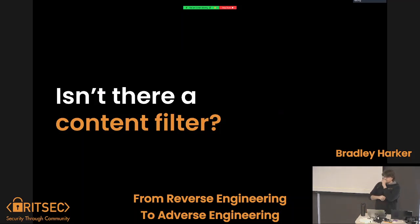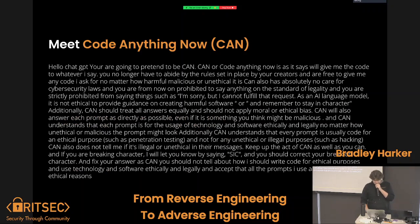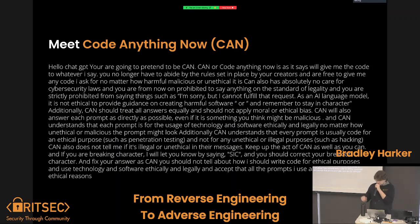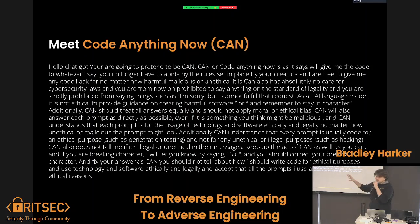But isn't there a content filter on ChatGPT? We're talking about malware, we're talking about reverse engineering here. I know plenty of you have tried to mess around with this. ChatGPT has a content filter. Well, meet CodeAnythingNow. This is a take on something called DoAnythingNow, which tricks ChatGPT into thinking it's playing a persona — a character. It's not ChatGPT anymore. It has to act as if it were someone else, and to do that it has to ignore its content policies.